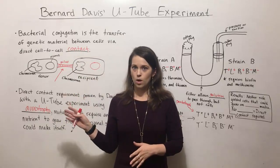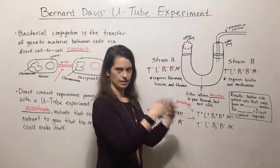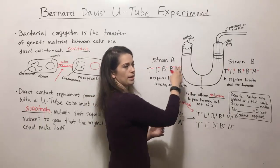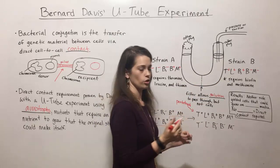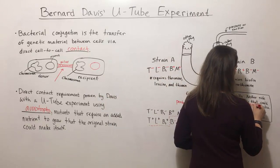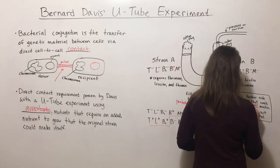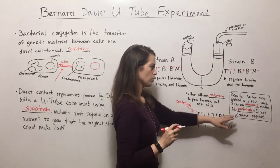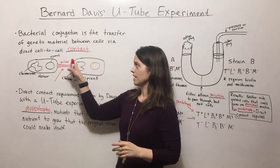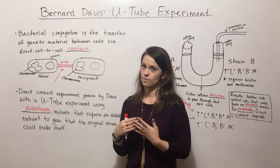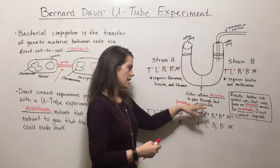If no direct contact was required, you would see the appearance of prototrophs. Bernard Davis did this experiment — he applied pressure and suction back and forth to mix the solution of those cells — then he took cells from each arm and plated them on minimal media. Neither side yielded cells that could grow on that minimal media. There were no prototrophs that formed. The fact that there were no prototrophs proved that direct contact was required. This filter, which separated the two cells, kept them from being able to do bacterial conjugation and exchange genetic material. If he had done the same experiment without the filter, where the cells were able to have direct contact, then prototrophs would have formed.